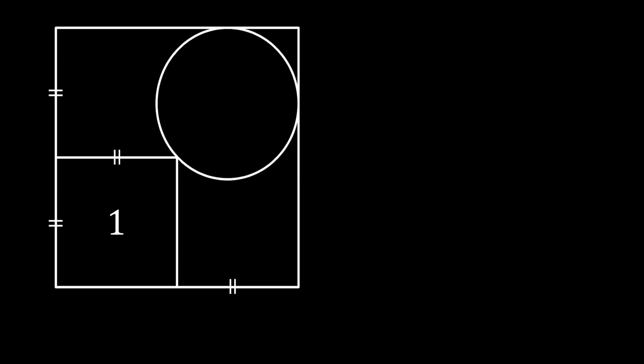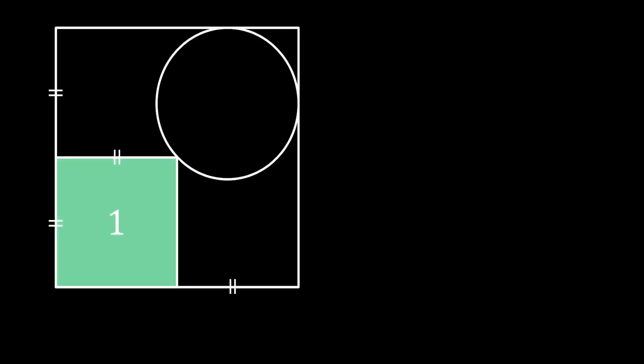We will start this method by taking a look at our smaller square. This square has the area of one, which means that the sides of this square must be equal to one as well. The remaining segments of the big square are equal to one as well, since the small square has a side which is twice as small as the side of the big square.